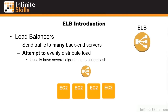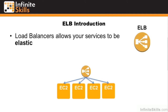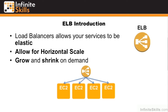Here we have a load balancer with several EC2 instances behind it. Traffic coming into that load balancer should be evenly distributed to each of the machines in the backend. Load balancers allow your services to be what we call elastic. They also allow for horizontal scale, which allows you to grow and shrink on demand.